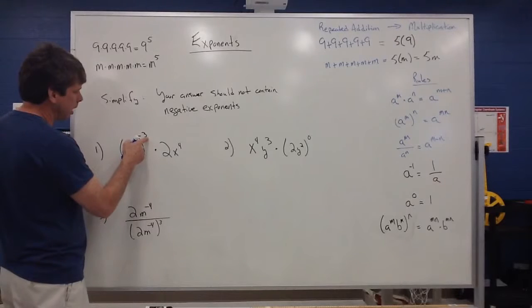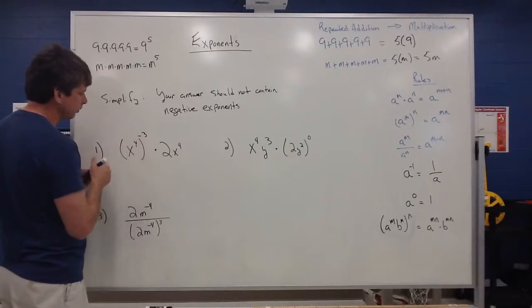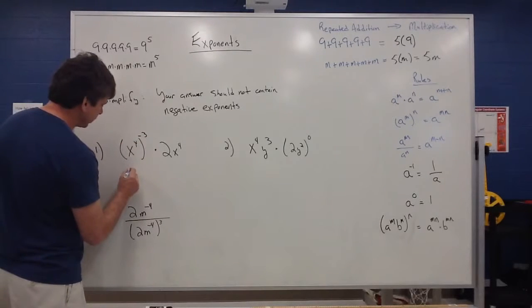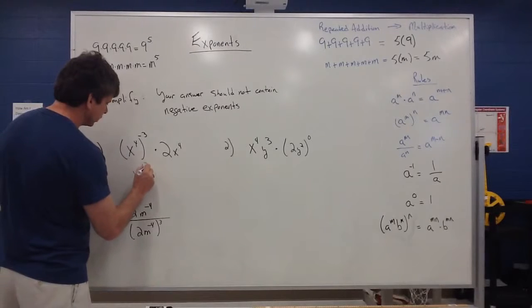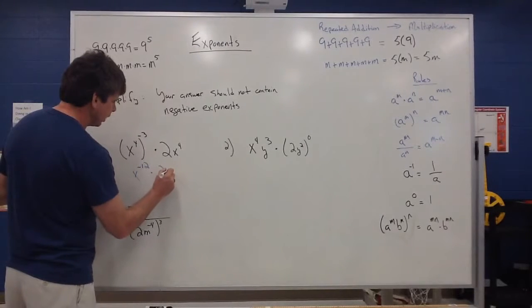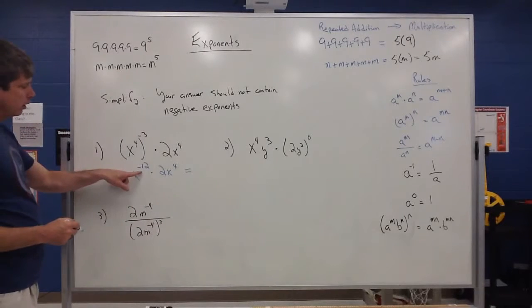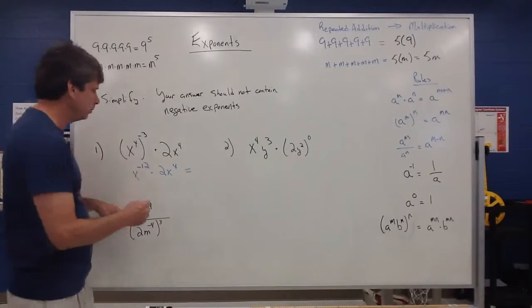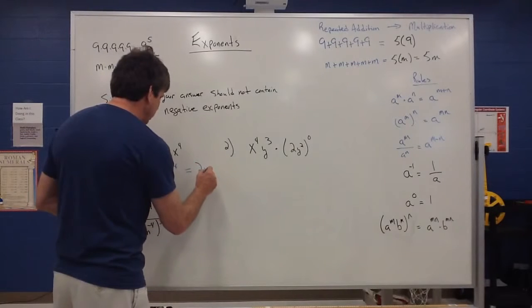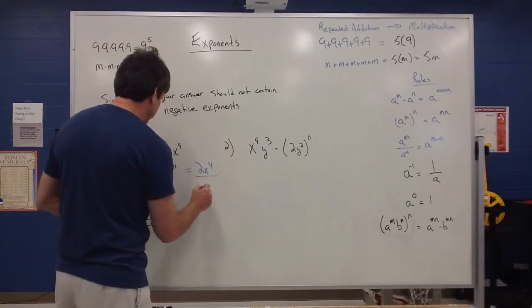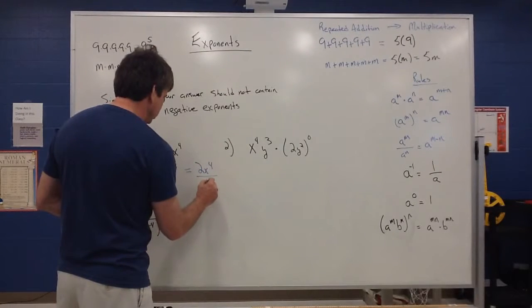So when I see a power raised to a power, that says I can multiply 4 times negative 3 and that's going to be x to the negative 12 times then 2 times x to the fourth. Now, the x to the negative 12 means that's going to move to the bottom. So I have 2x to the fourth and then x to the 12th on the bottom.